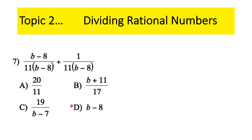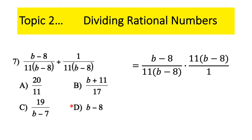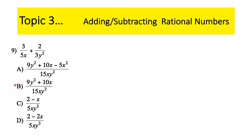One more division problem, much more complicated. Remember, before any canceling, do copy-dot-flip first. After the flip, there's a (B−8) and a (B−8) — we can cancel those because there's multiplication. That also means we can cancel the 11s. What we're left with is (B−8) over 1 — that's answer C.